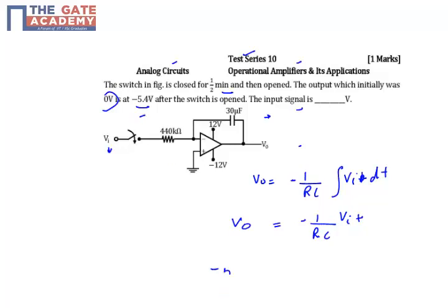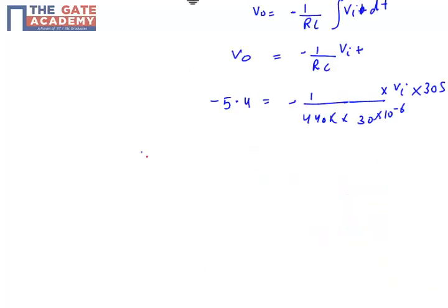Question says that when the switch is opened your output level is minus 5.4, which equals 1/(RC). R is 440k ohms, C is 30 microfarads, times V_i input signal you need to find out. And t time is given as half a minute, converted into seconds it will be 30 seconds. So your V_i is basically...